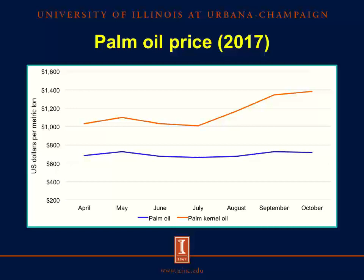The final question would be the cost of these products. This graph shows the price of palm oil and palm kernel oil from April to October of 2017. Palm kernel oil is more expensive than palm oil. Taking September as an example, the metric ton of palm oil was $724, whereas one metric ton of palm kernel oil was $1,346 — twice the price of palm oil.